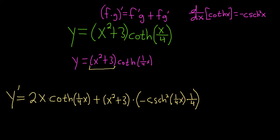Let's check our work. This is the first piece, x squared plus 3. This is the second piece, the hyperbolic cotangent of one-fourth x. So the derivative of the first, check, times the second, check, plus the first, check, times the derivative of the second. That looks good.